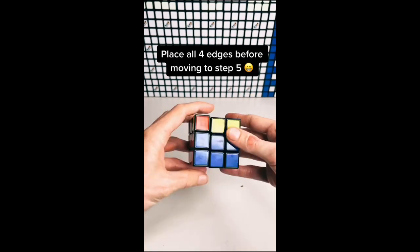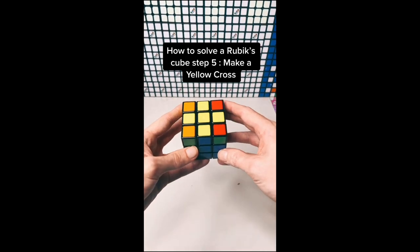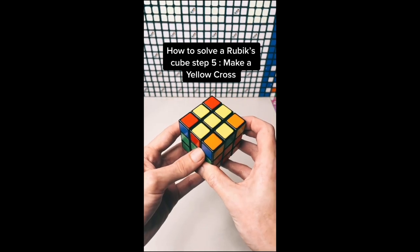Place all the edges before moving to step 5. How to solve a Rubik's Cube step 5: Make a yellow cross.